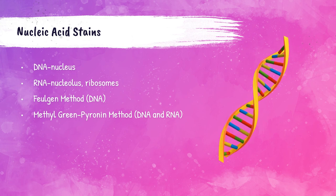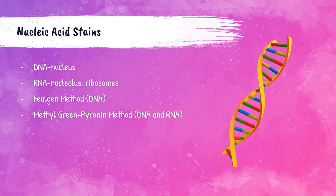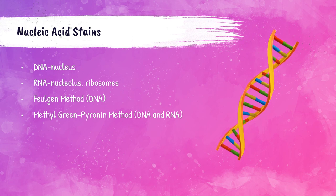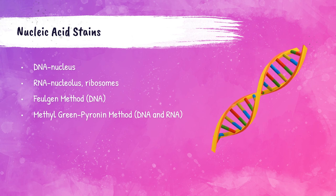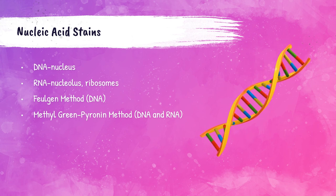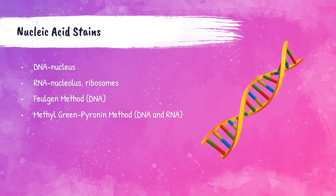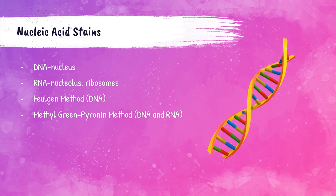Deoxyribonucleic acid, or DNA, is found in the nucleus and makes up the nuclear chromatin. Ribonucleic acid, or RNA, is found in the nucleolus and in ribosomes. DNA and RNA are nucleic acids and are not stained in routine histopathology laboratories, but two methods exist for their staining: the Feulgen reaction for DNA, and the methyl green pyronin method for both DNA and RNA.